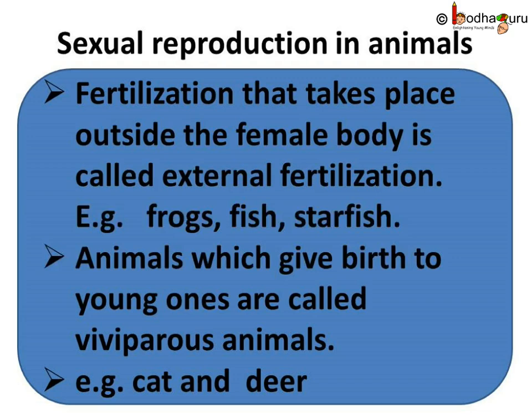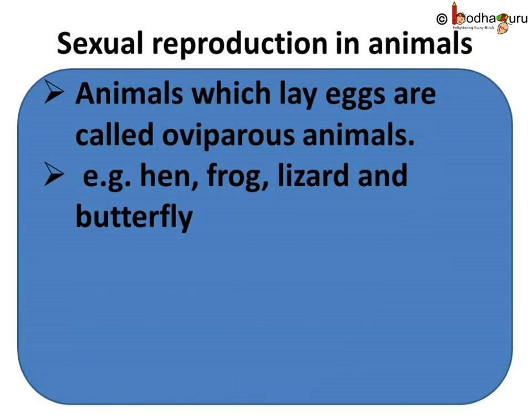Fertilization that takes place outside the female body is called external fertilization — for example, frogs, fish, starfish, etc. Animals which give birth to young ones are called viviparous animals, for example cat and deer. And lastly, animals which lay eggs are called oviparous animals — for example, hen, frog, lizard, and butterfly.